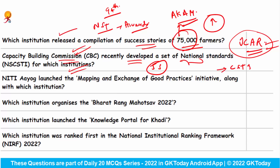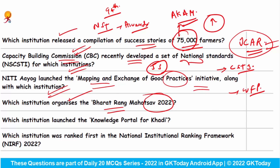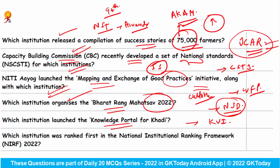NITI Aayog launched the mapping and exchange of good practices initiative along with the World Food Program. Which institution organizes the Bharat Rang Mahotsav 2022? This was launched by the National School of Drama, which is an autonomous organization under the Ministry of Culture. Which institution launched the knowledge portal for Khadi? The answer is KVIC, developed by the Centre of Excellence for Khadi, which works under the Ministry of MSME.